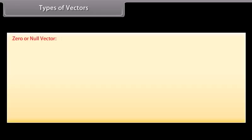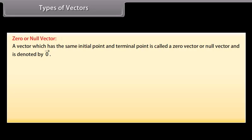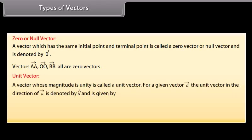Types of vectors. Zero or Null vector: a vector which has the same initial point and terminal point is called a zero vector or null vector, and is denoted by vector 0. Unit vector: a vector whose magnitude is unity is called a unit vector. For a given vector A, the unit vector in the direction of A is denoted by cap A and is given by cap A equals vector A divided by mode of vector A.